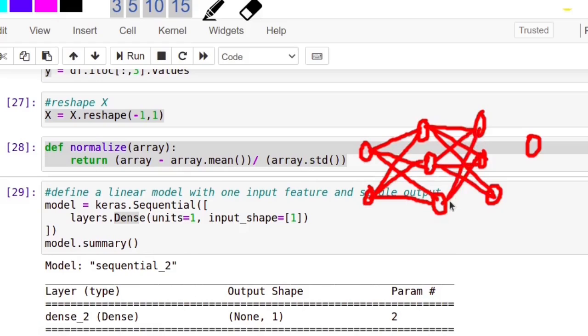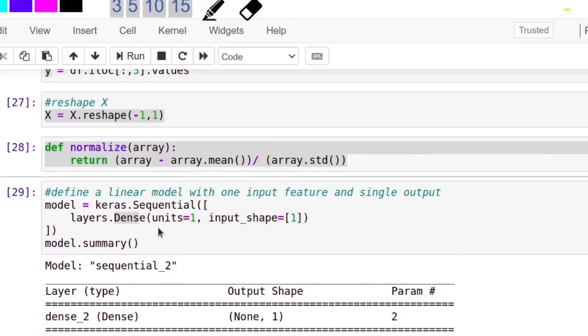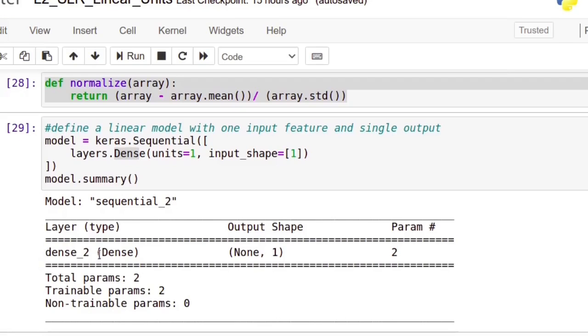Since we are using single neuron, units will be 1. And input is also single variable, so input shape is also 1. This is the model summary.